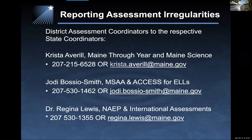To report assessment irregularities, you should contact the respective or appropriate state coordinator. Each assessment may have its own process for reporting irregularities. The school assessment coordinator and/or administrator should report irregularities according to the respective service center or help desk for each individual assessment. In many cases, the state assessment coordinator or help desk will provide instructions for immediate resolution, such as unlocking or resetting the test session. For more complex irregularities, the state assessment coordinator will contact the district assessment coordinator or principal and possibly initiate an investigation.